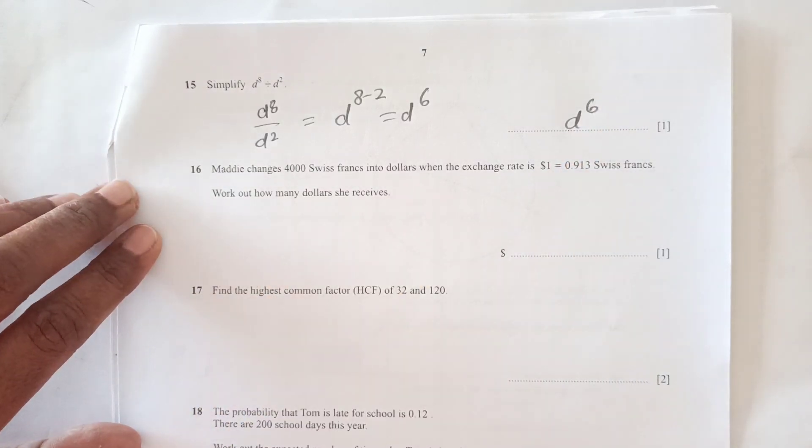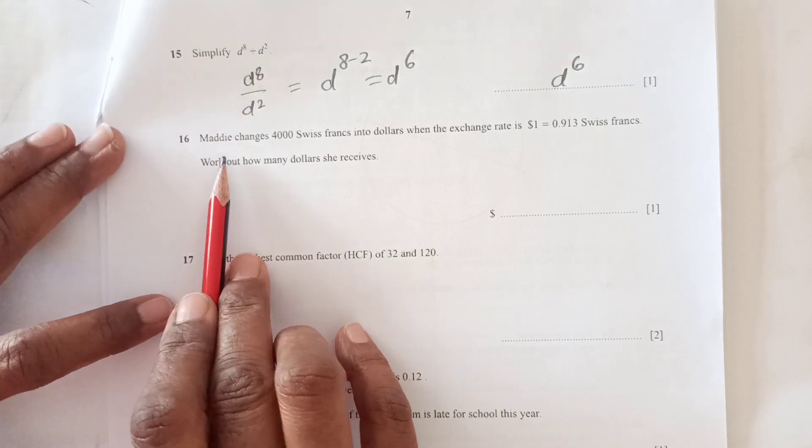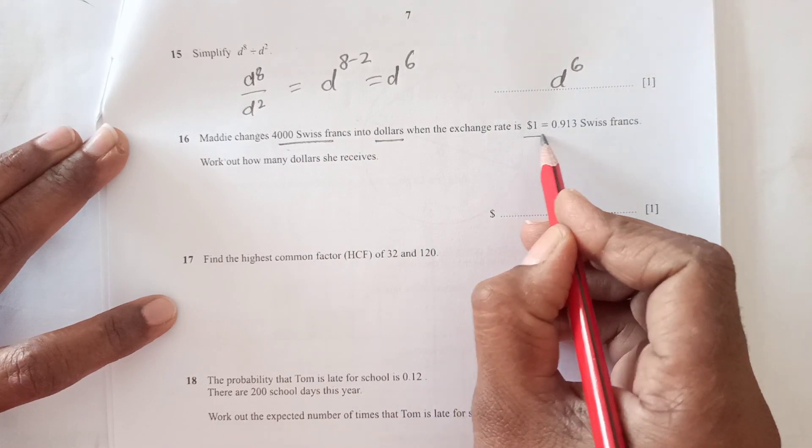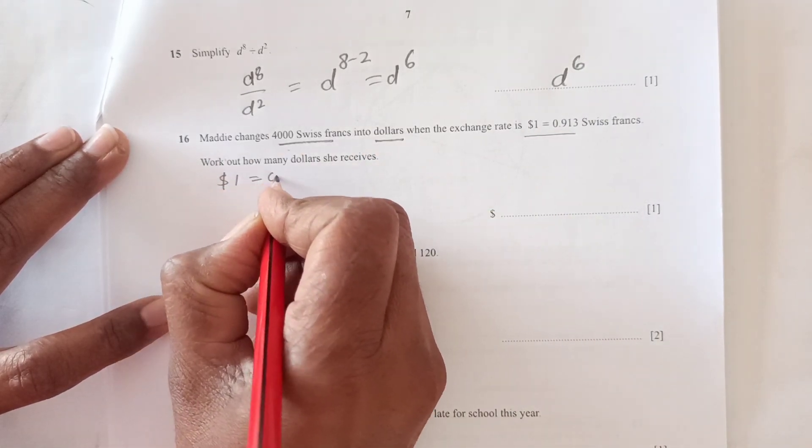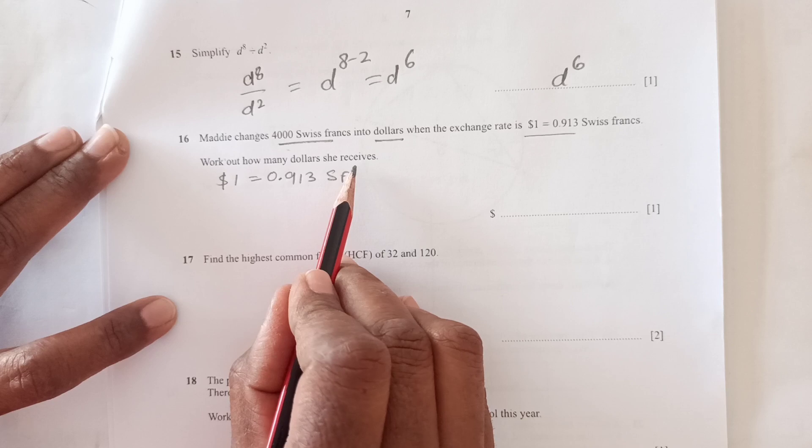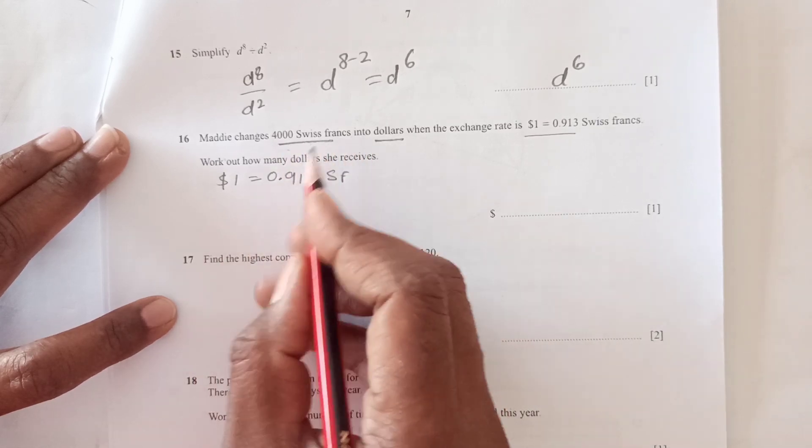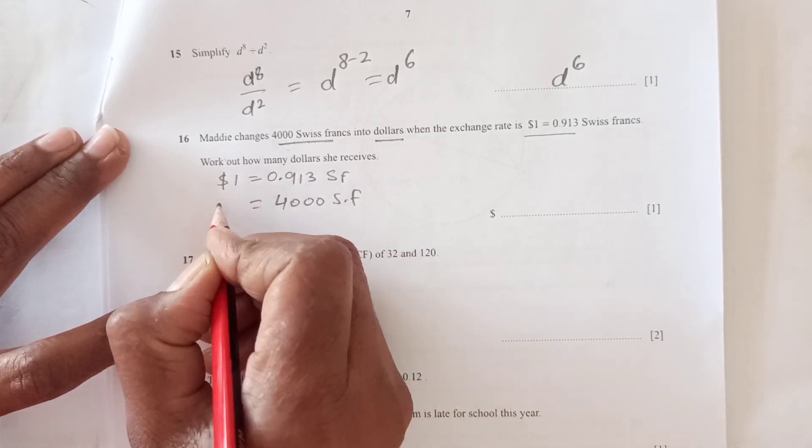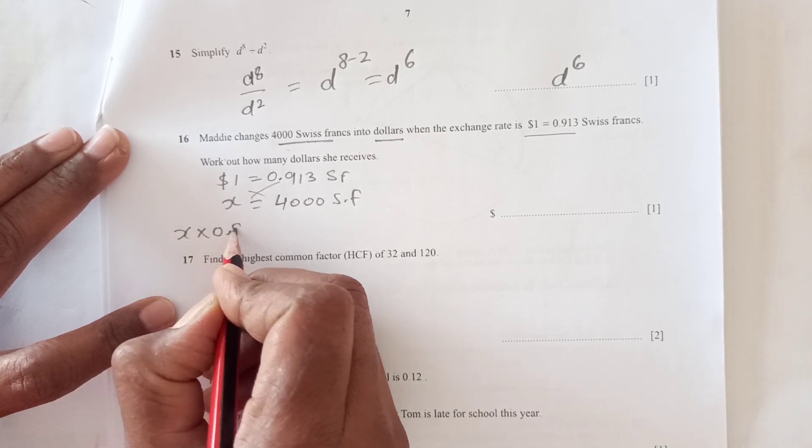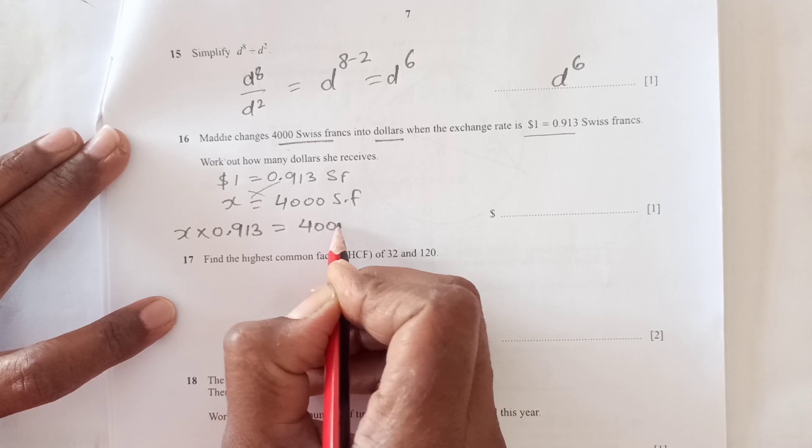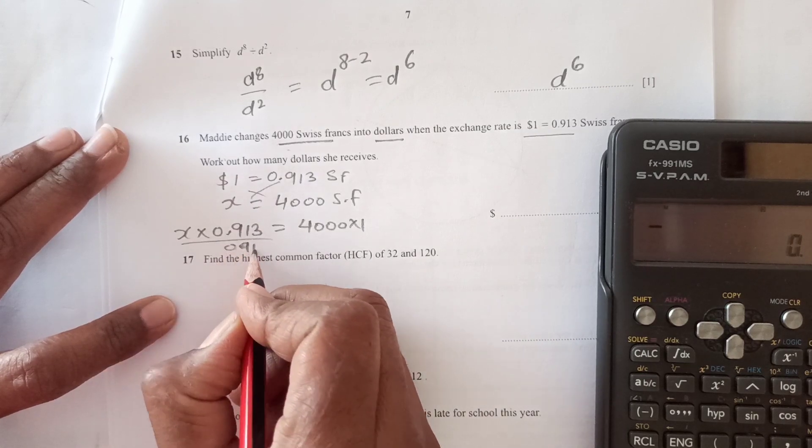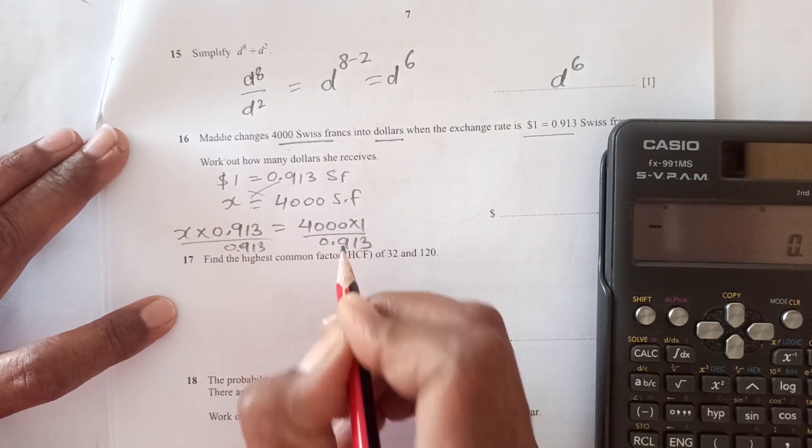Number 16: Maddie changes 4000 Swiss francs into dollars when the exchange rate is $1 to 0.913 Swiss francs. Work out how many dollars she receives. We're going to cross multiply, so this will be x times 0.913 equals 4000 times 1.